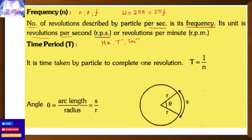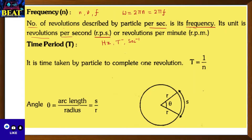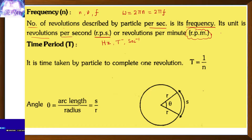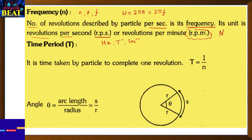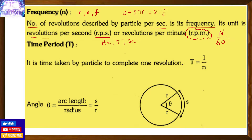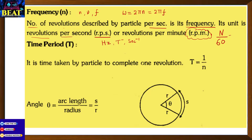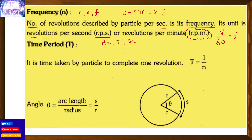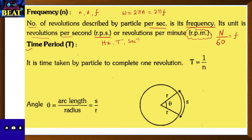Sometimes frequency is given in RPM (revolutions per minute), denoted by capital N. To convert RPM to RPS (frequency), divide by 60. This gives you the rotation per second, which is the frequency.